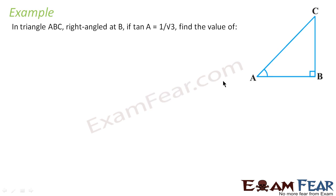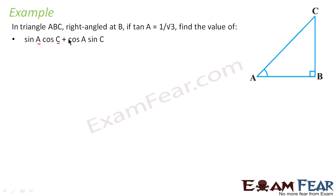We'll take one more example. In triangle ABC, right-angled at B, if tan A is equal to 1 by root 3, we have to find the value of sin A cos C plus cos A sin C. This is a little tricky question because here we are talking about different angles — sin A and cos C — so we have to find perpendicular and base for angle A and also for angle C.